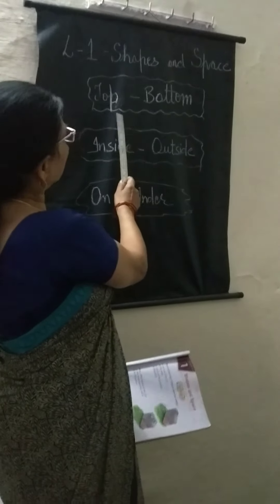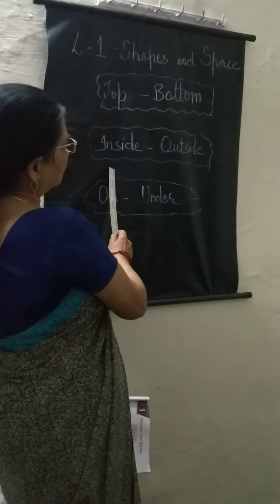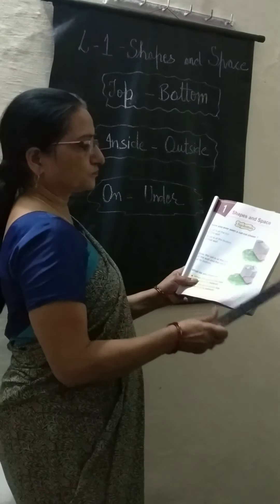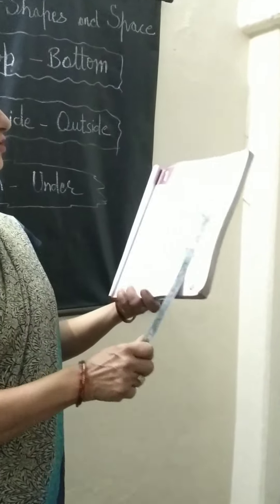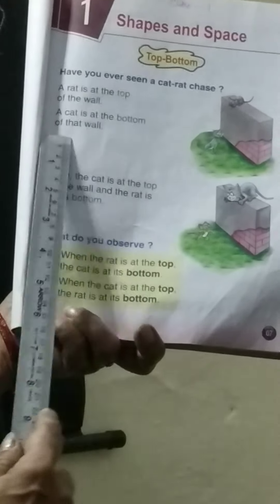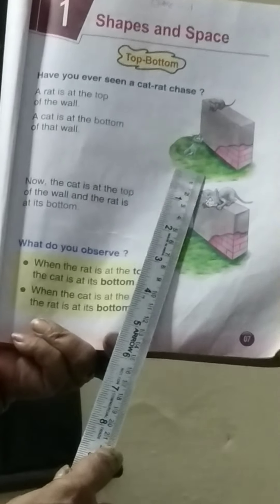Today we will study top, bottom, inside, outside, on, and under. Now open your first page. Look at the picture. Here, the rat is at the top of the wall. Rat is at the top and cat is at the bottom.